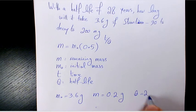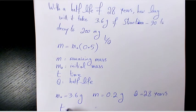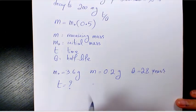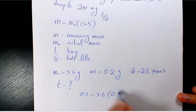And T, the time, is going to be the time that it takes going from 3.6 grams to 0.2. So I'm going to say 0.2 equals to 3.6(0.5) to the power of T divided by 28.